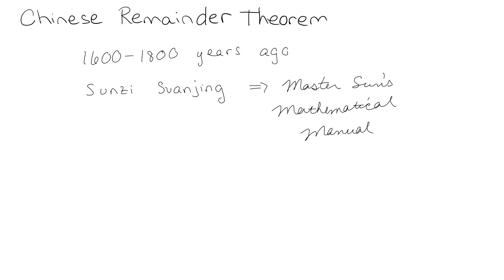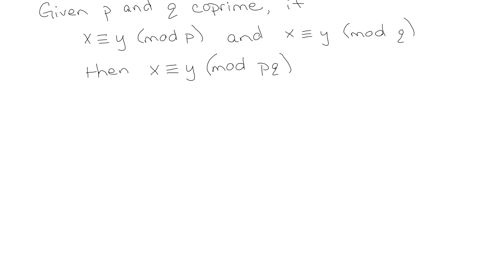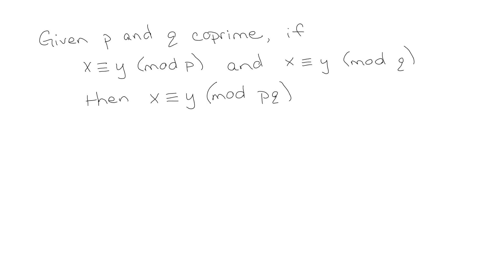So let's talk about what this actual theorem is. And I say this in all love of this theorem, but when would your brain ever be like, 'this is one day gonna be useful information'? So: if P and Q are co-prime, and if X is congruent to Y modulo P, and X is congruent to Y modulo Q, then X is congruent to Y modulo the product of P and Q. And you're like, 'yeah, that's exactly what I wanted to know.'